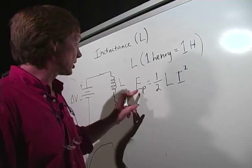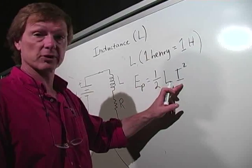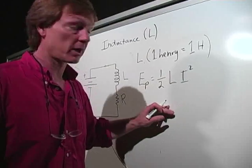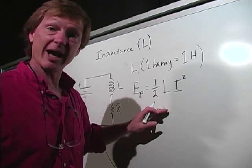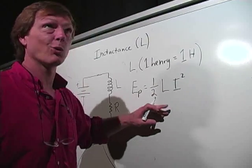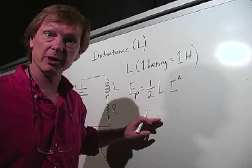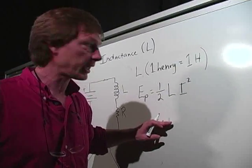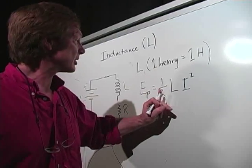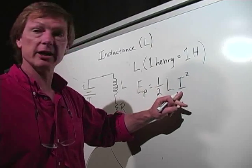You notice this. 1/2 inductance times current squared. 1/2 capacitance times voltage squared. Same kind of formula. 1/2 mass times velocity squared for kinetic energy. 1/2 spring constant times displacement squared for spring energy. It's always something that fights the motion times some rate squared.